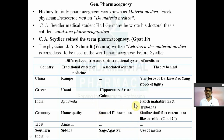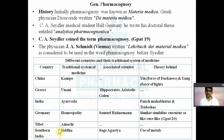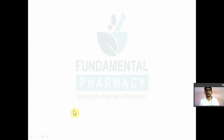For Germany, you have homeopathy, and the scientist associated with this is Samuel Hahnemann — this was again a question in these kinds of exams. The theory behind homeopathy is similia similibus curentur, or 'like cures like' — this was a question in GPAT 2020. Tibet has the Amachi traditional medicinal system. Southern India has the Siddha system of traditional medicine, associated with sage Agastya. The theory behind Siddha includes the use of metals and heavy metals such as mercury, iron, copper, and silver for treatment.